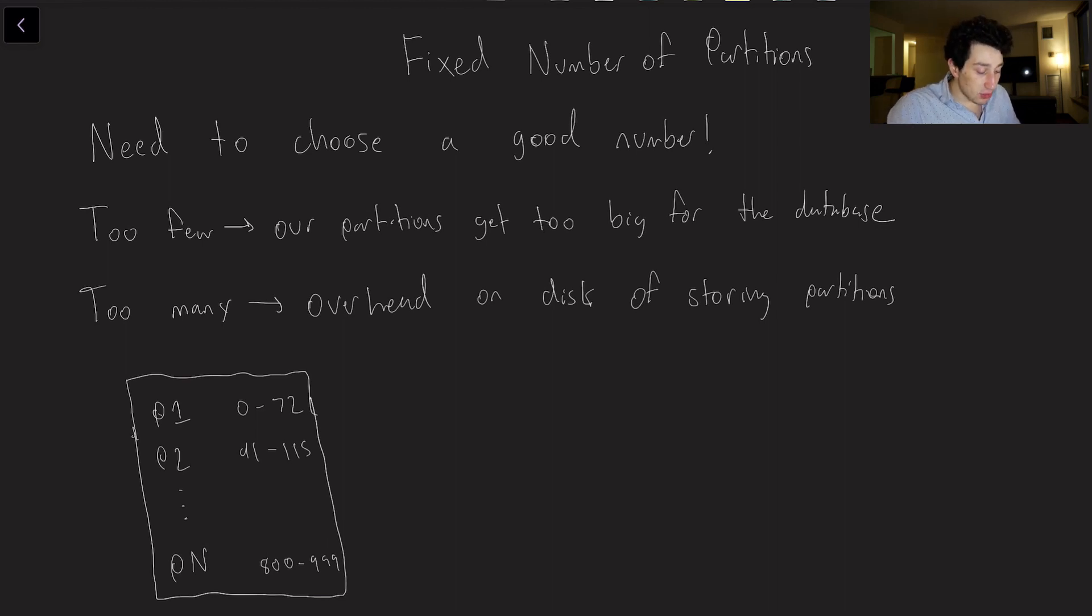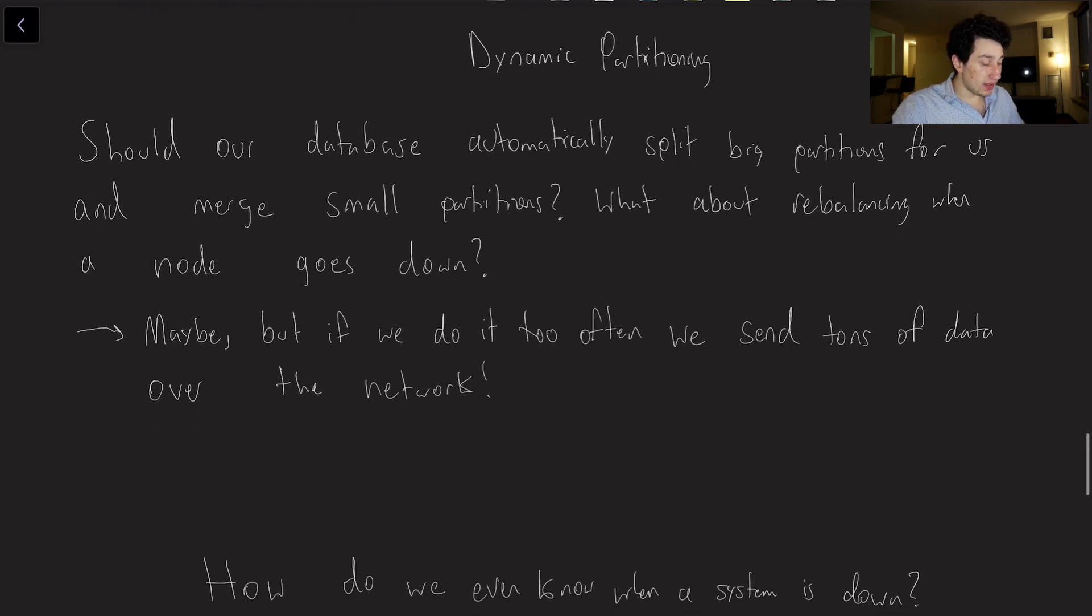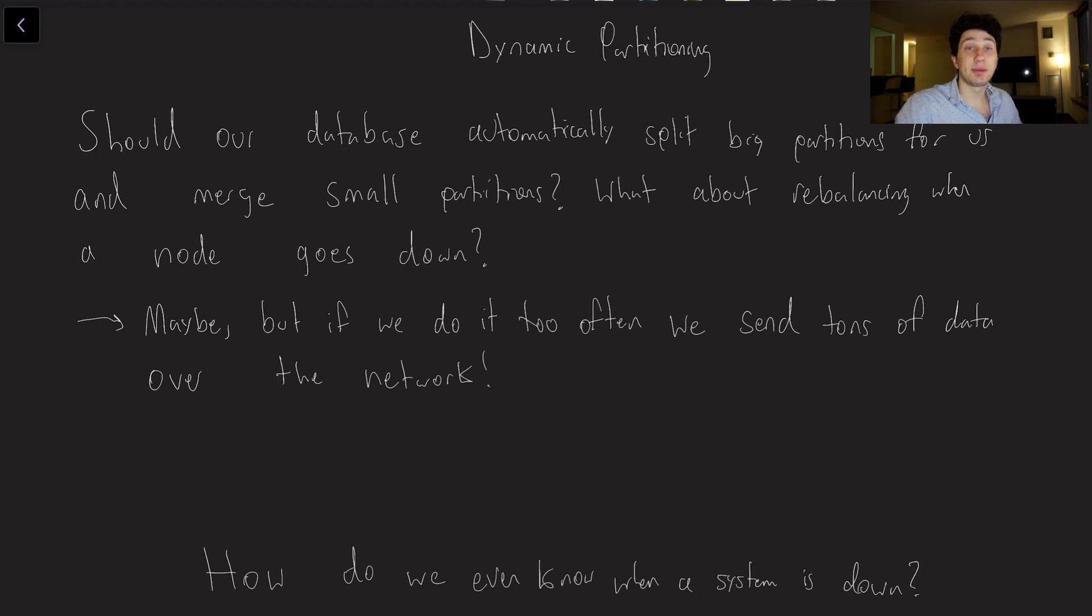At the same time, if you were to do too many, basically now we have a bunch of overhead on our hard drives of keeping track of what partition means what. So for example, I have to keep track here that partition one is corresponding to the range zero to 72. Here's the same thing with partition two, all the way through partition n. So if we have a bunch of those, this table could in theory take up some extra space on our disk, and we don't really want to be doing that.